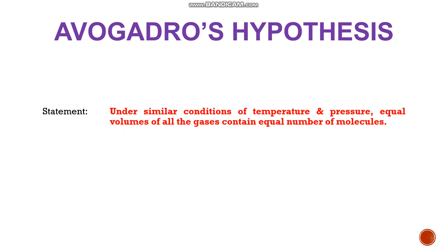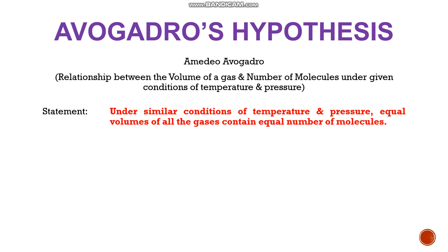After this, we will discuss a very important hypothesis — Avogadro's hypothesis, given by Amedeo Avogadro. This hypothesis gives a relationship between the volume of a gas and the number of molecules under a given set of temperature and pressure. The statement is: under similar conditions of temperature and pressure, equal volumes of all gases contain equal number of molecules. So if we have several gases at the same temperature and pressure, regardless of the nature of the gas, equal volumes of those gases will contain equal numbers of molecules.